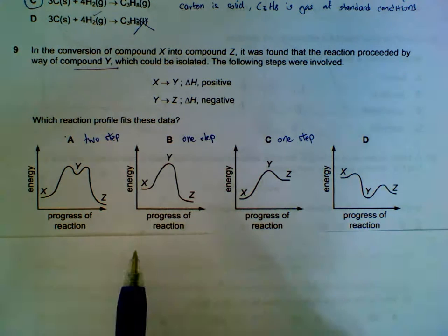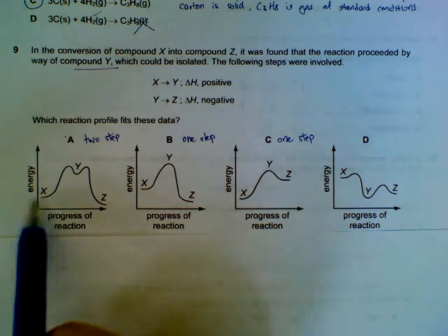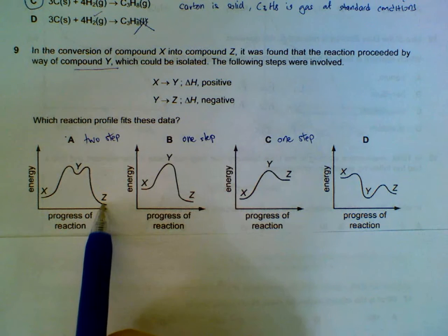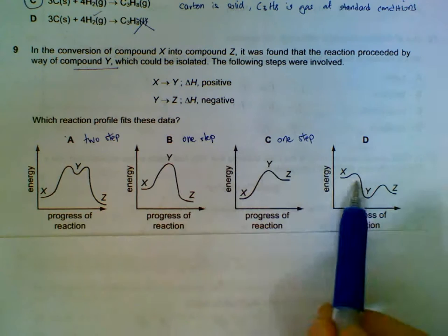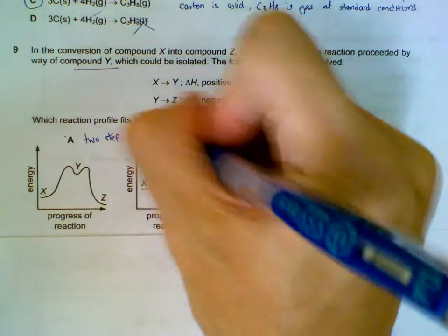So what we have to see is. Look for the graph that has 2 steps. 2 humps. This is 1-step. 1-step. This is 2-step. So B and C are out.